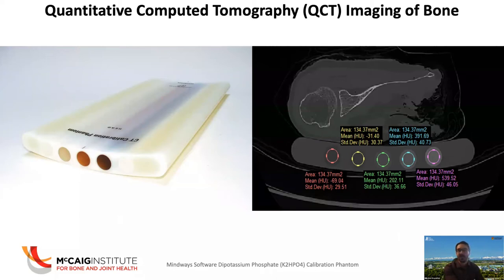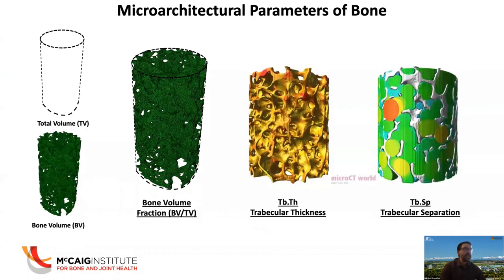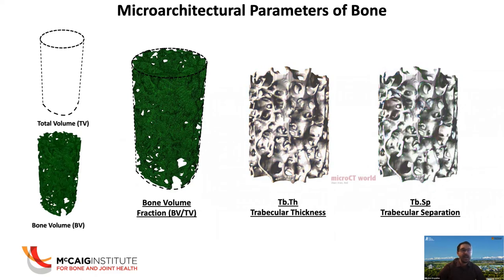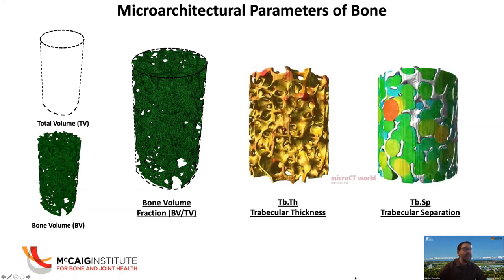You can also use phantom-less measurements, which are becoming more popular in the modeling of bone using clinical CT scans. If we look at microarchitectural parameters of bone — with high resolution imaging maintaining that nice architecture — there are many different parameters discussed in the literature. Bone volume fraction represents the ratio of bone volume to total volume of a sample, such as a core from trabecular bone in the glenoid. Trabecular thickness represents the mean thickness of the trabeculae, and trabecular separation represents the spaces in between the trabeculae.